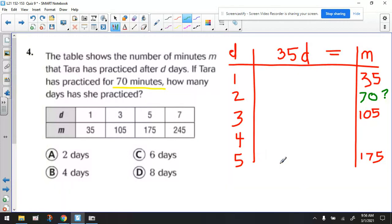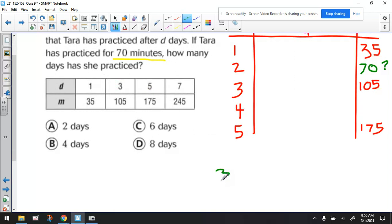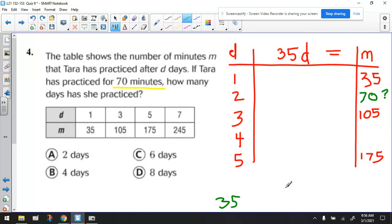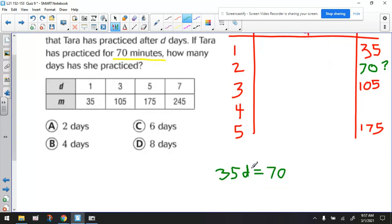We can use algebra to solve this because this is minutes, right? So we're really solving the equation 35 times D equals 70. And we learned that when you solve this type of equation, what's the opposite of multiply a variable by 35? It's to divide by 35. We would do that to both sides of the equation.